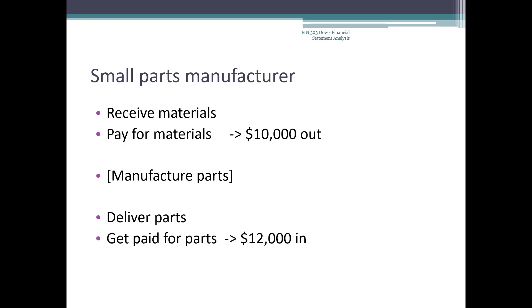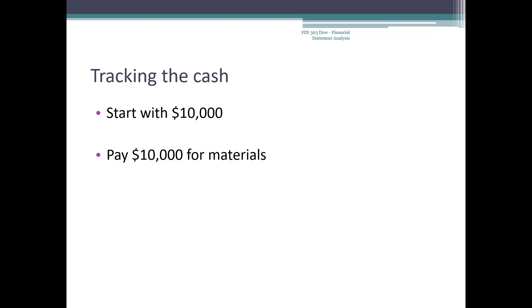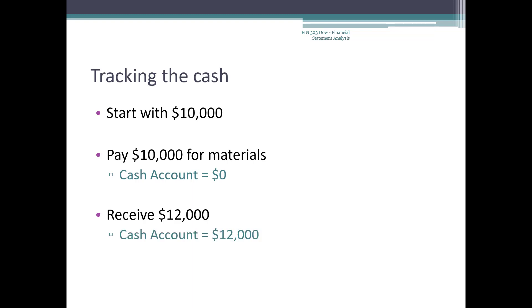Even for established firms, cash flows in and out will be uneven, so they have to make sure that they have available cash before needed payments. We could create a cash account statement to track the cash. It would show $10,000 at the start. Then after paying out the $10,000, it would go to zero. Then when we receive the $12,000, it would go up to $12,000. When we start the process again by paying $10,000 for more materials, it would fall to $2,000. Managing the cash account is important since businesses don't want to hit zero and not have enough cash if something comes up.